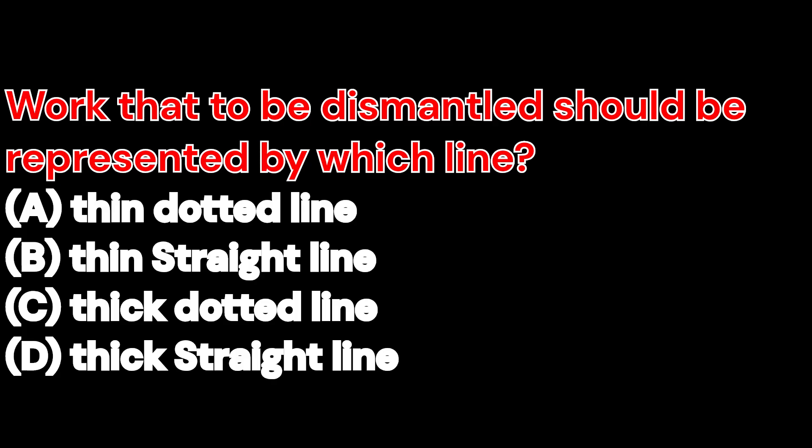Work that is to be dismantled should be represented by which line? A. Thin dotted line. B. Thin straight line. C. Thick dotted line. D. Thick straight line. And the right answer is thin dotted line.